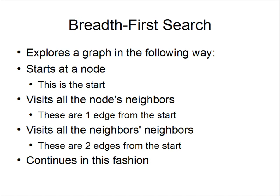It explores a graph by starting at one vertex and visiting all of that vertex's neighbors, which can be considered one edge away from the start. After it visits all the vertices that are one edge away from the start, it visits the vertices which are two edges away from the start, which are the neighbors of the neighbors of the starting vertex.